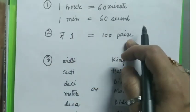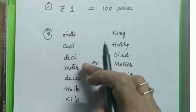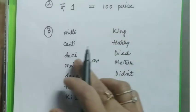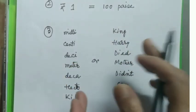Rupee 1 equals 100 paise. And here: milli, centi, deci, meter, deca, hecto, kilo.